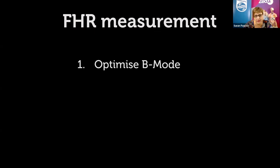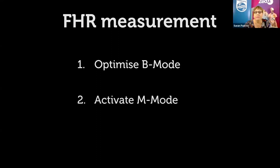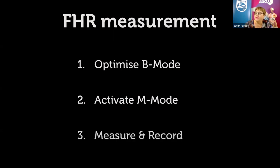To get a good M-mode measurement, there are three simple steps. Step one: optimize your B-mode image. Locate the fetal heart, adjust the depth and focus so the picture is optimized with baby looking as large as possible, then apply zoom — only zoom after you've optimized. Step two: activate the M-mode trace by pushing the M button. Allow enough time for the trace to record your fetal heartbeats, then push the freeze button.